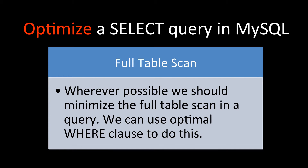For full table scan, wherever possible we should minimize full table scans in a query. We should try to add an optimal WHERE clause so that a full table scan is not done. Generally, in the WHERE clause we use some kind of indexed column, and then the full table scan will not be run on that table.